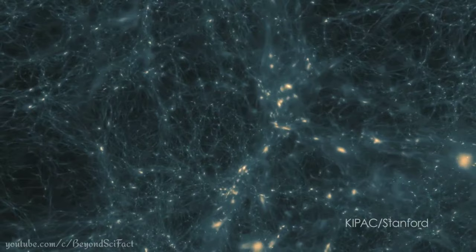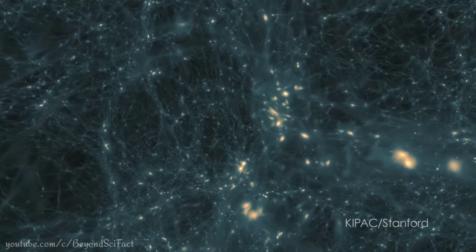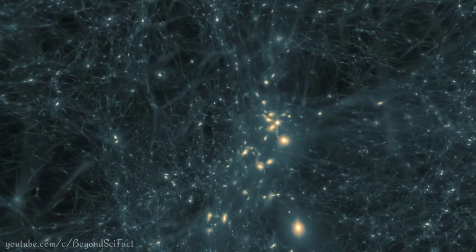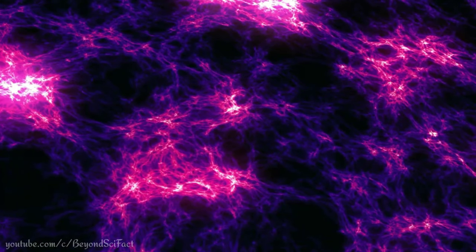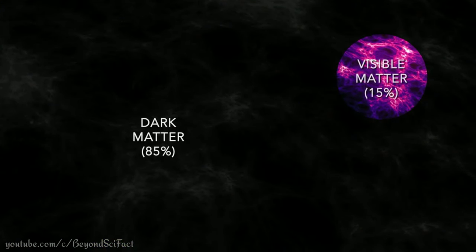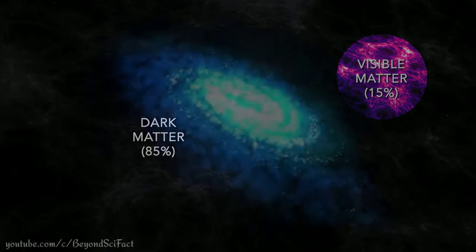Have you ever thought how can physicists study dark matter beyond gravitational effects if it is practically invisible? Three different approaches are pursued. First, indirect detection with astronomical observatories, searching for the decay products of dark matter annihilations in galactic centers.